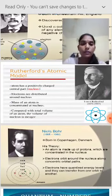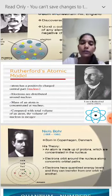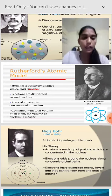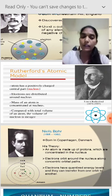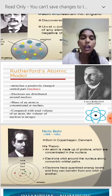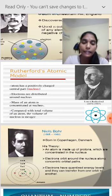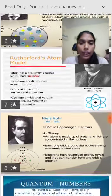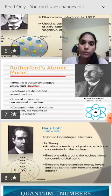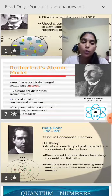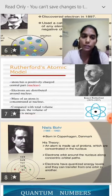Next is Rutherford's Atomic Model. His full name is Ernest Rutherford. He was born in 1871 and he died in 1937. Rutherford also proposed one model, known as Rutherford's Atomic Model.